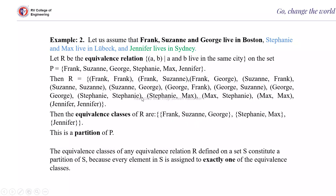The second equivalence class: start with Stephanie. Stephanie is related to Stephanie, then Stephanie is related to Max, so Stephanie and Max will be in the same set. Max is also related to Max, and Max is related to Stephanie. So the second class is {Stephanie, Max}. The left out element is Jennifer, who is related only to Jennifer. So these are the three equivalence classes, which are the partitions of relation R.